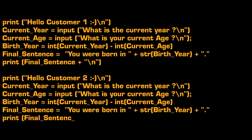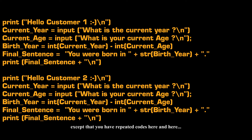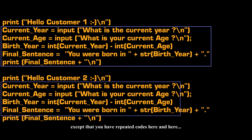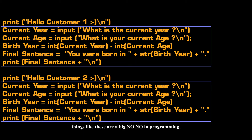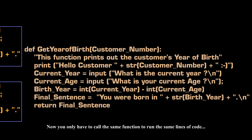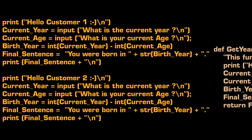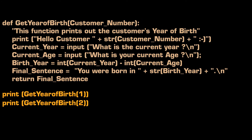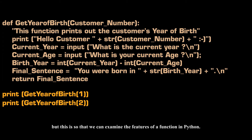Consider these lines of code. There is nothing wrong with the code, except that you have repeated code here and here. Things like this are a big no-no in programming. This is where the concept of a function comes in. Now you only have to call the same function to run the same lines of code. The way the function is being used here is rather questionable, but this is so that we can examine the features of a function in Python.